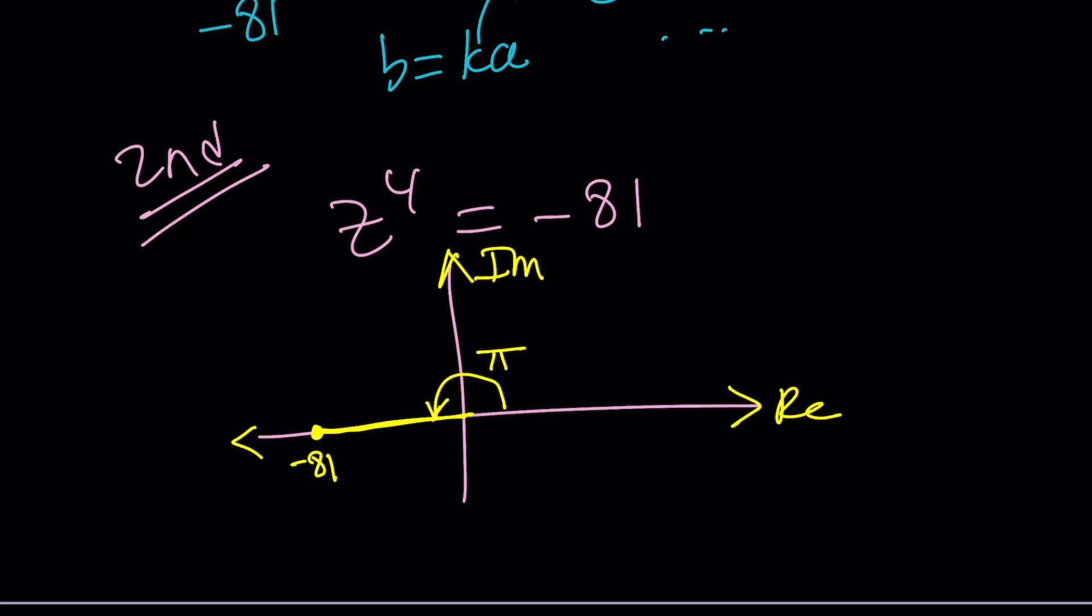So in other words, I can write this as 81 times e to the power i pi. Pi is the principal argument. But you can also add multiples of 2 pi to it and proceed with that. And that's actually needed in this case because this is only going to give you one solution. So instead of just pi, you may write pi plus 2 pi n where n is an integer. All right?